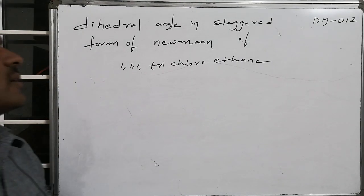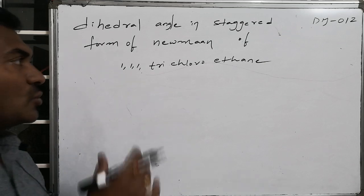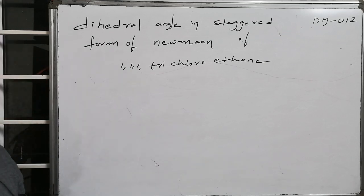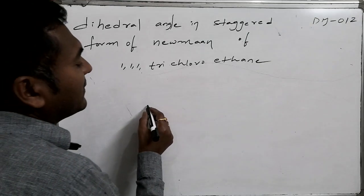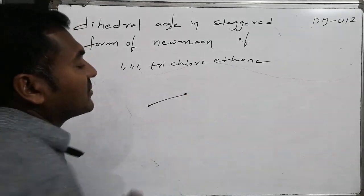The dihedral angle in the staggered form of Newman projection related to 1,1,1-trichloroethane is... If I go for ethane, this is the presentation of ethane.